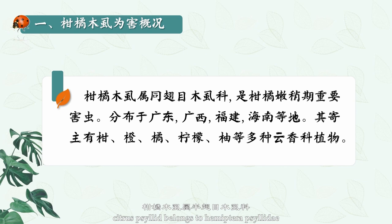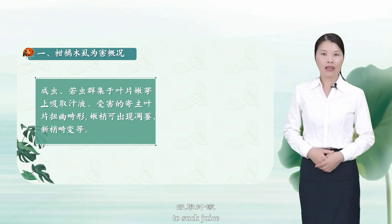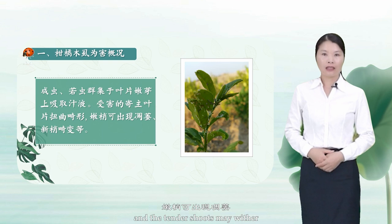Hello students. Today we will learn about citrus psyllid — the general situation and damage it causes. Citrus psyllid belongs to Hemiptera Psyllidae, which is an important pest in the tender stage of citrus. Its hosts are citrus, orange, tangerine, lemon, pomelo, and many other plants of the Rutaceae family. Adults and nymphs swarm on leaf buds to suck juice, causing leaves of the injured host to become distorted, tender shoots to wither, and new shoots to be distorted.